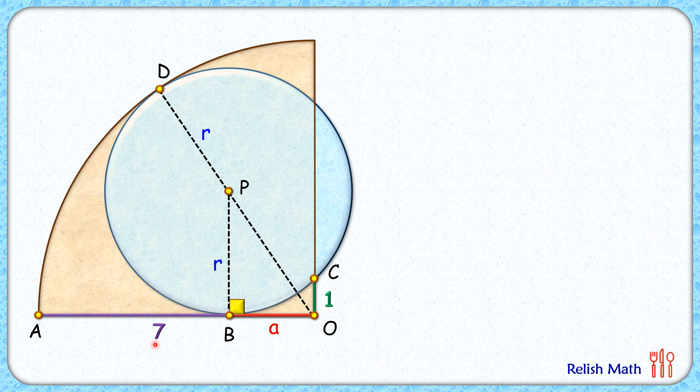And thus PO length will be 7 minus r. Now in triangle PBO, applying Pythagoras theorem, we'll get r² + a² = (7-r)². To solve this equation, we need one more equation in terms of variables r and a. For the same, let's do some more construction.